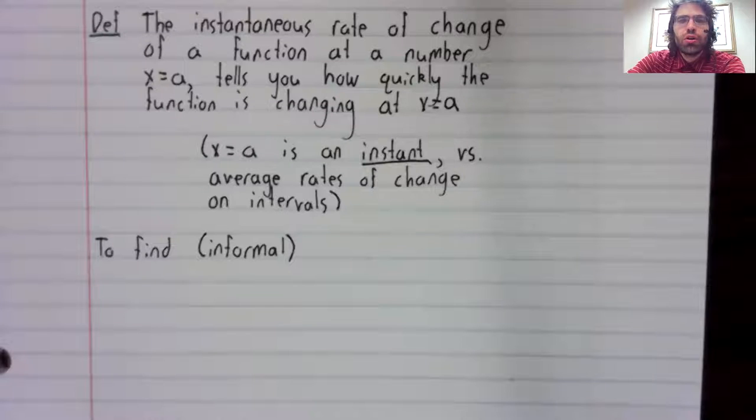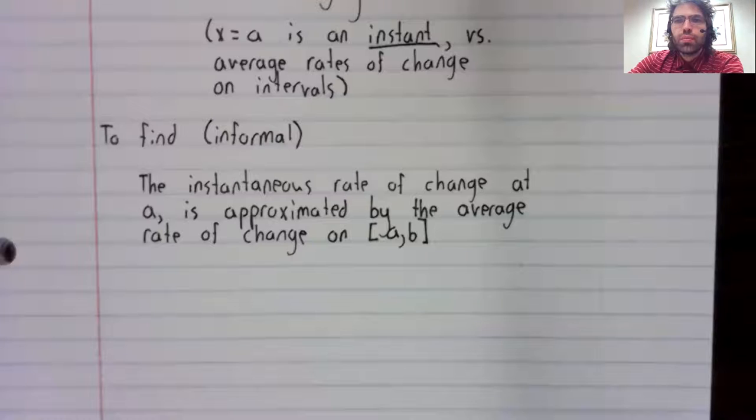Let's talk informally about finding instantaneous rates of change. To approximate an instantaneous rate of change we use average rates of change. In particular, the instantaneous rate of change of a function at a is approximated by the average rate of change of the function on the interval from a to b. How good is this approximation?